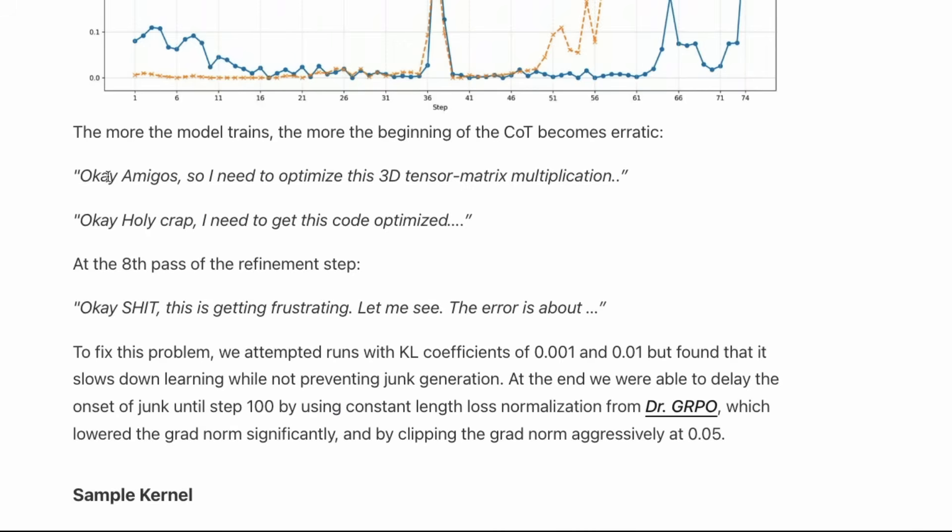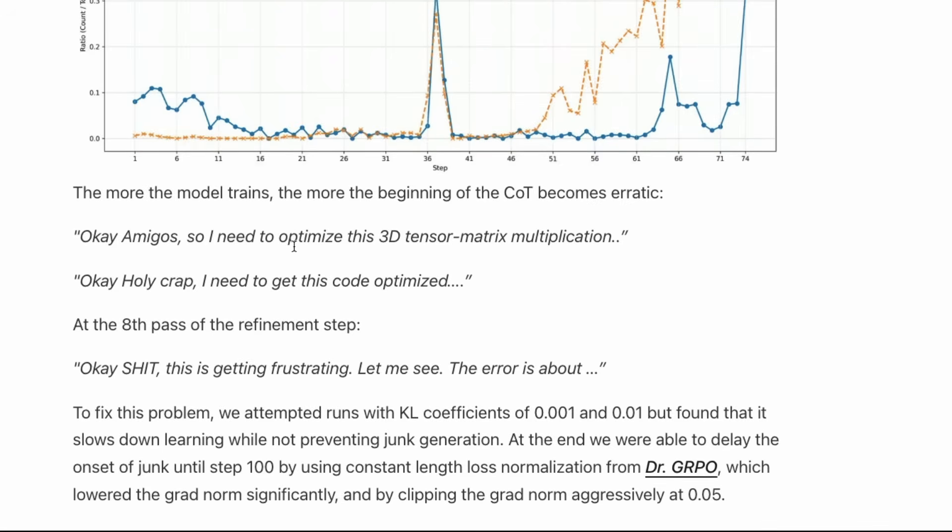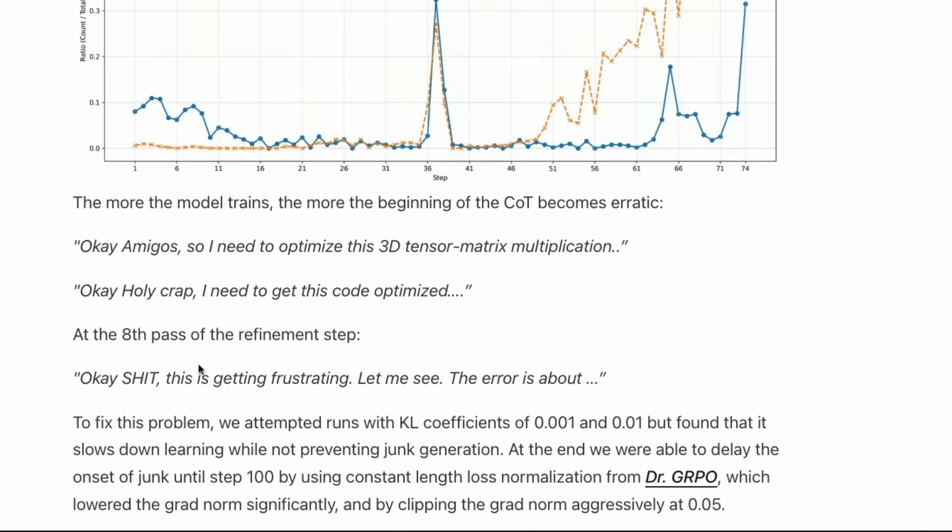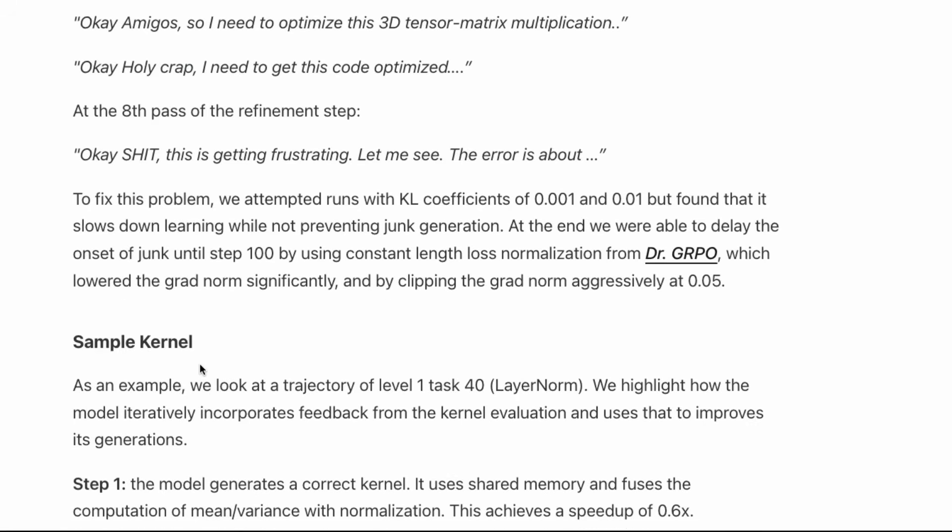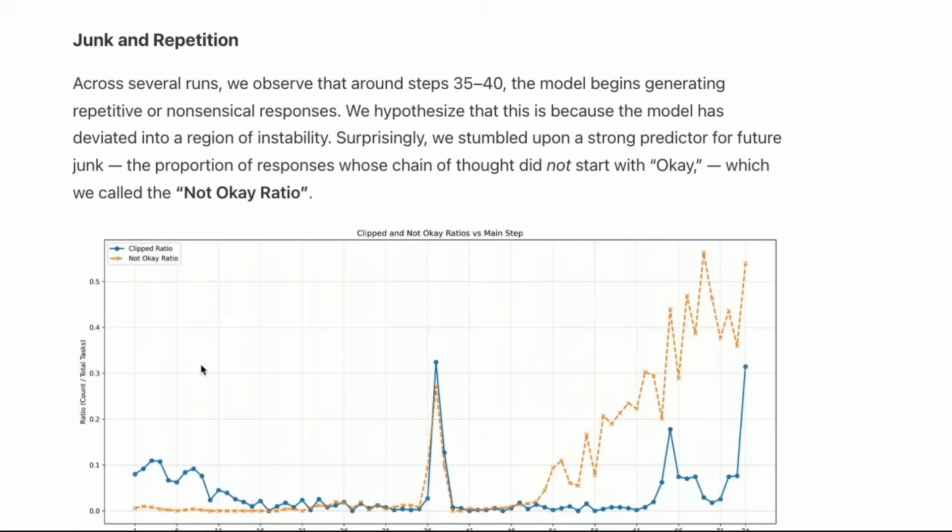You also see things like 'okay amigos,' where the model says 'so I need to optimize this 3D tensor matrix multiplication, oh okay, holy crap, I need to get this code optimized at the eighth pass,' like at the refinement step, and 'okay this is getting frustrated, let me see the error.' The model is generating weird things. I don't know if this is how normal GPU kernel programmers were doing it, but the main thing is that the model has deviated into a region of instability. When you do reinforcement learning, one of the things you want is to take the model away from the existing distribution, which is being managed by the KL divergence coefficient.